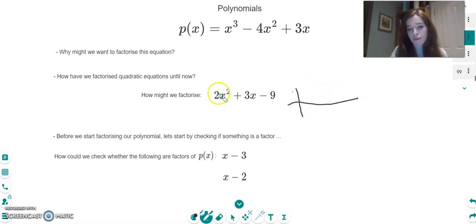So I normally draw a table like this. And I know in front of one of the x terms, I'm going to have a 2, and in front of the other one, I'm going to have a 1. So I put that on this side of the table. And then I know I need to make minus 9. So I'm probably going to do that with 3 and minus 3. And I can have those the other way around, or 9 and minus 1, and vice versa.